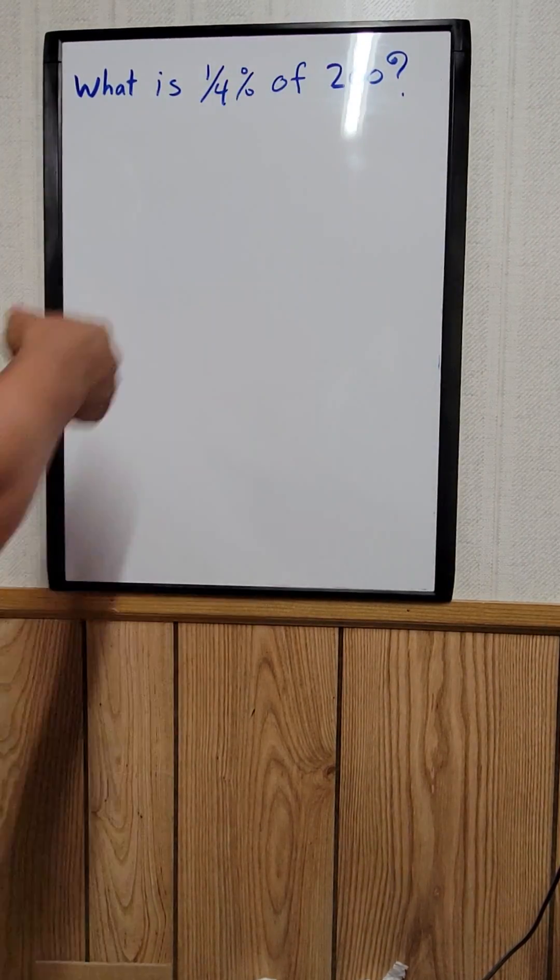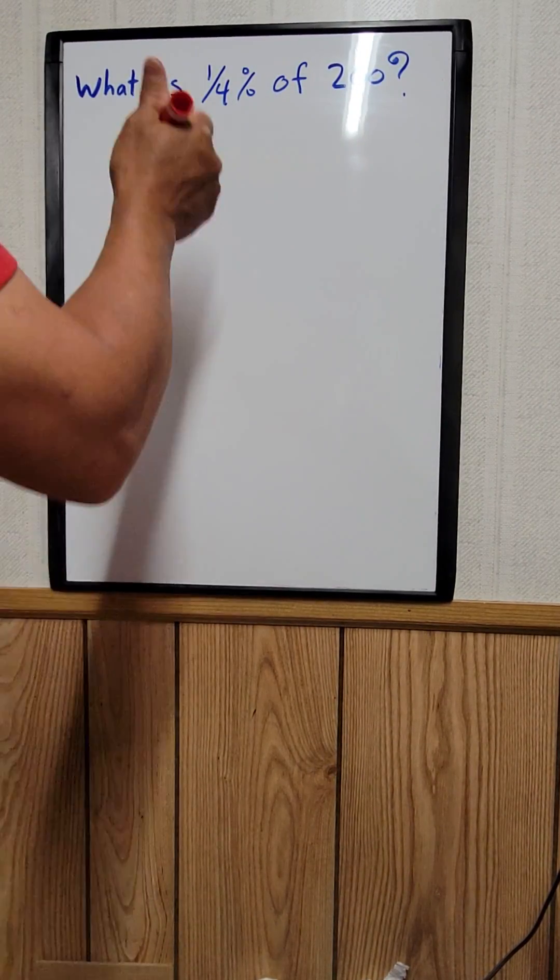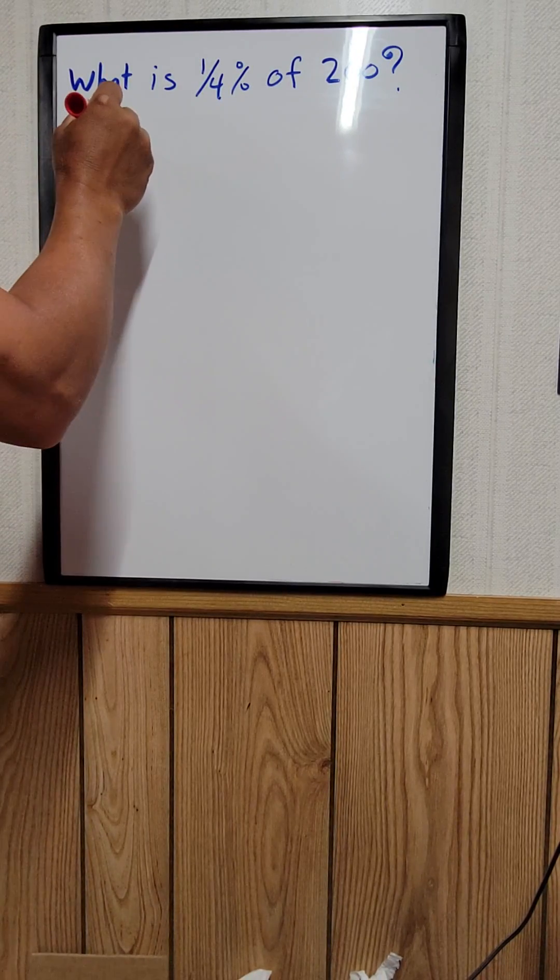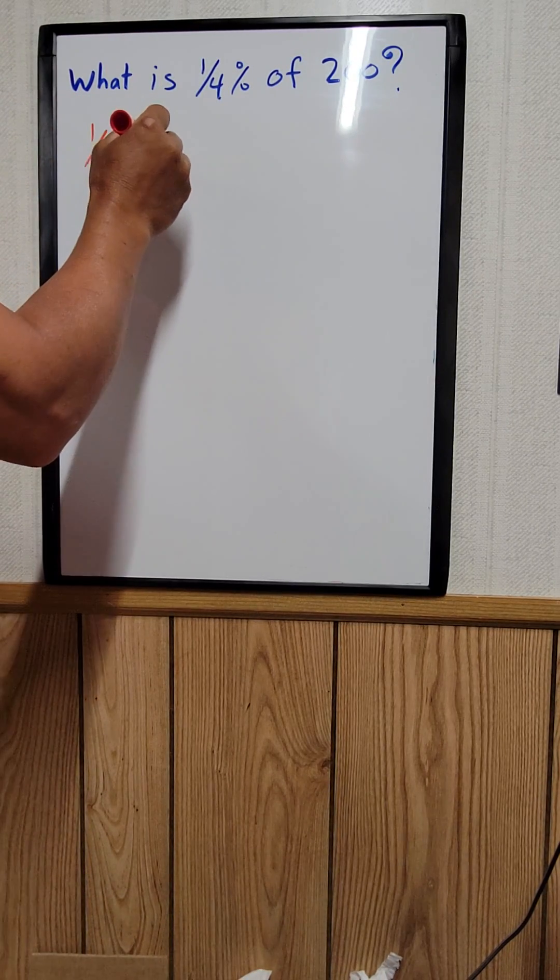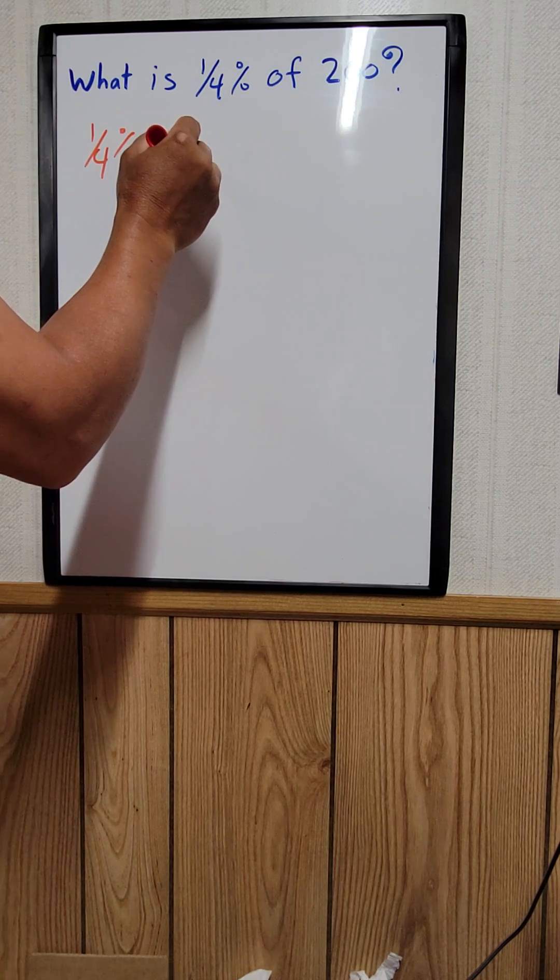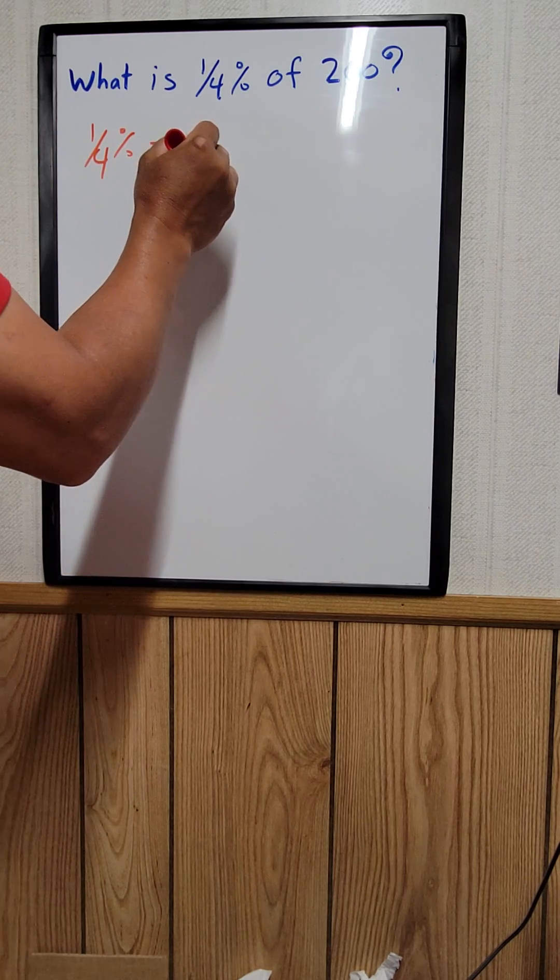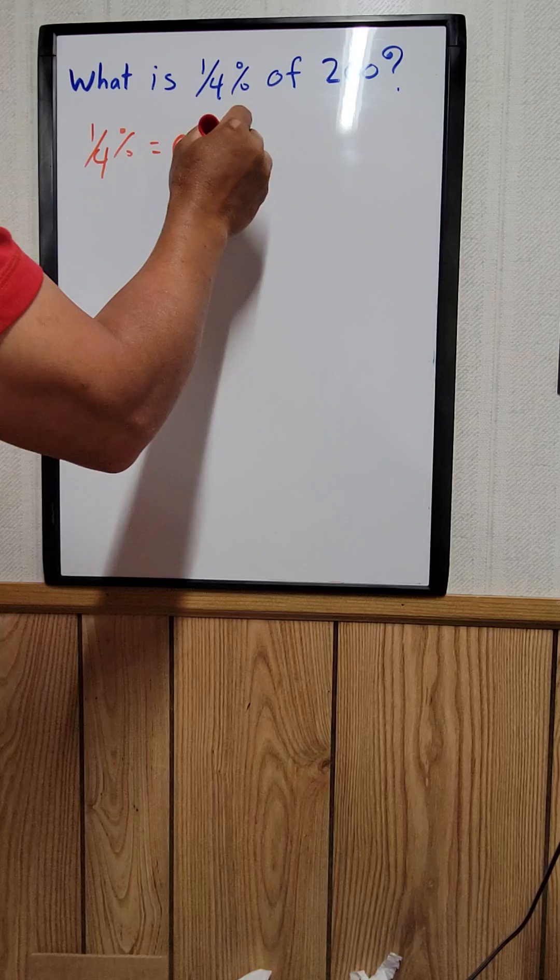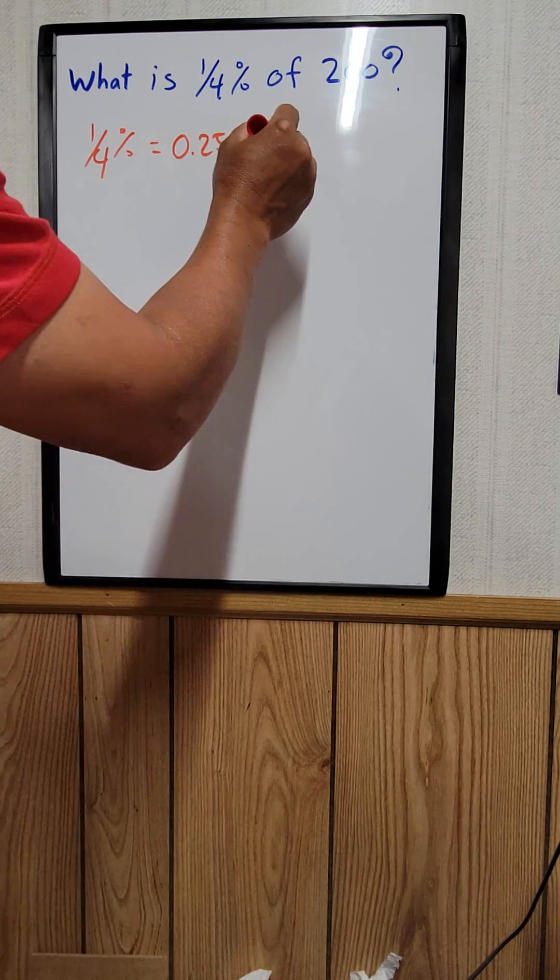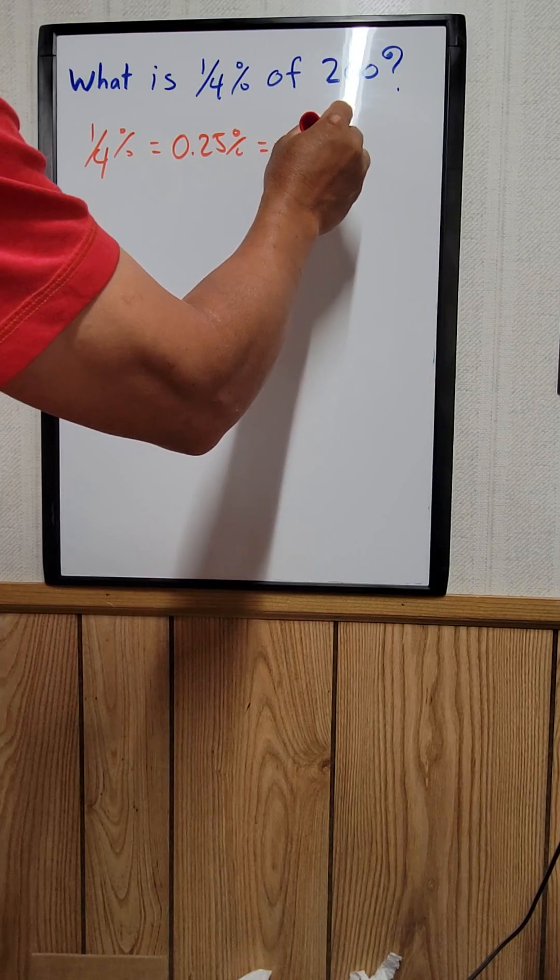What is one-fourth percent of two hundred? One-fourth percent is equal to 0.25%, or if you want to convert it to decimal, it would be equal to 0.0025,